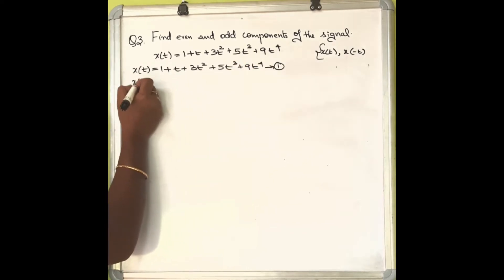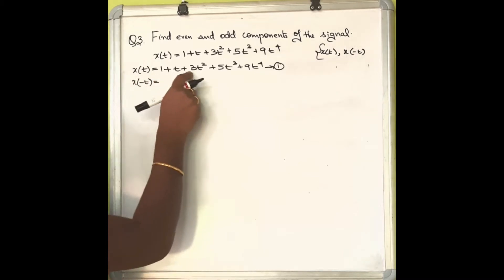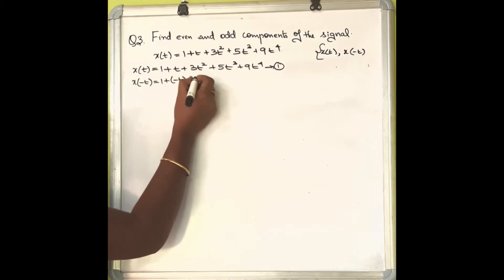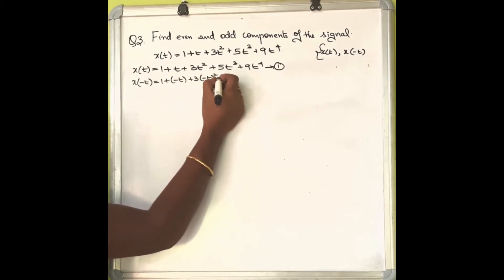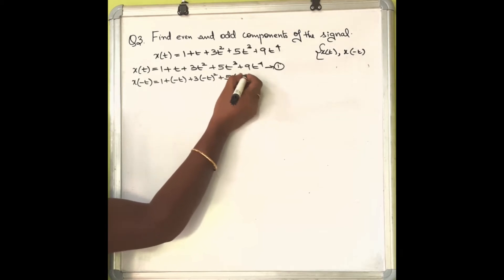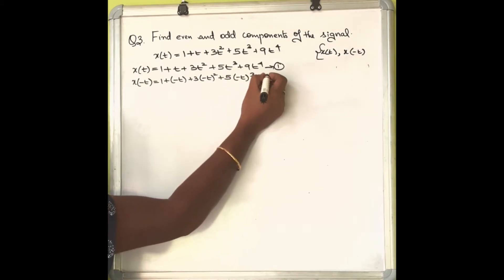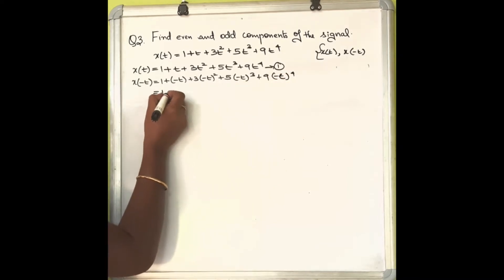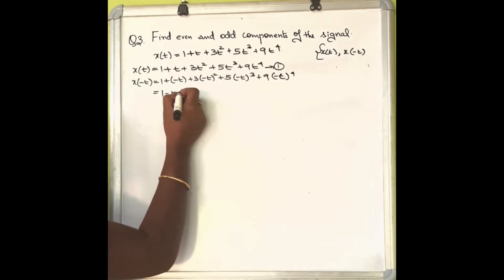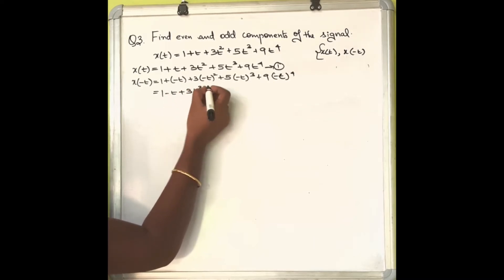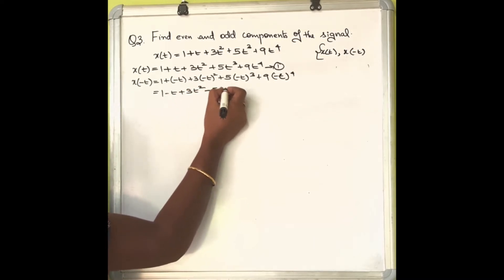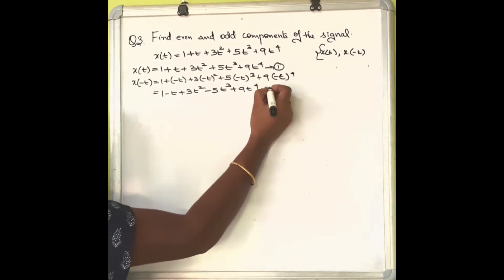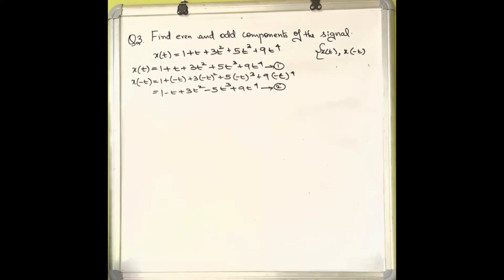Equation 2, that is x(-t): wherever t appears, substitute with minus t. So we get 1 + (-t) + 3(-t)² + 5(-t)³ + 9(-t)⁴, which simplifies to 1 - t + 3t² - 5t³ + 9t⁴. This is the second equation.